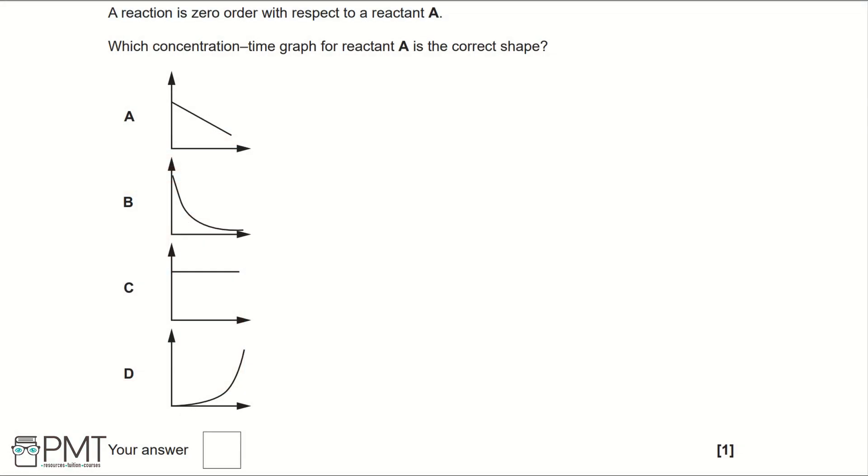A reaction is zero order with respect to a reactant A. Which concentration time graph for reactant A is the correct shape?